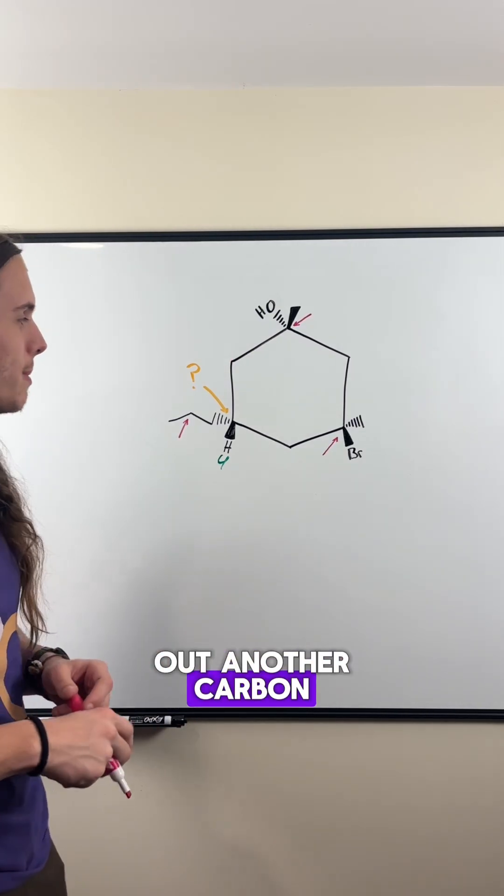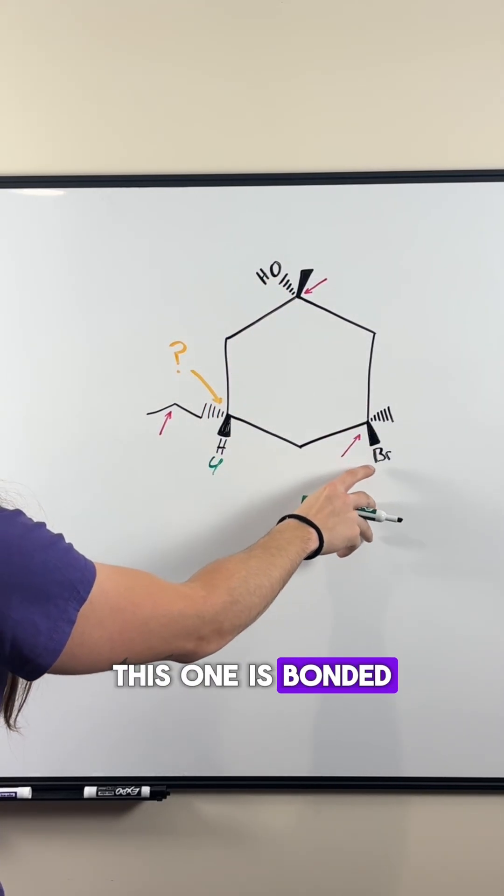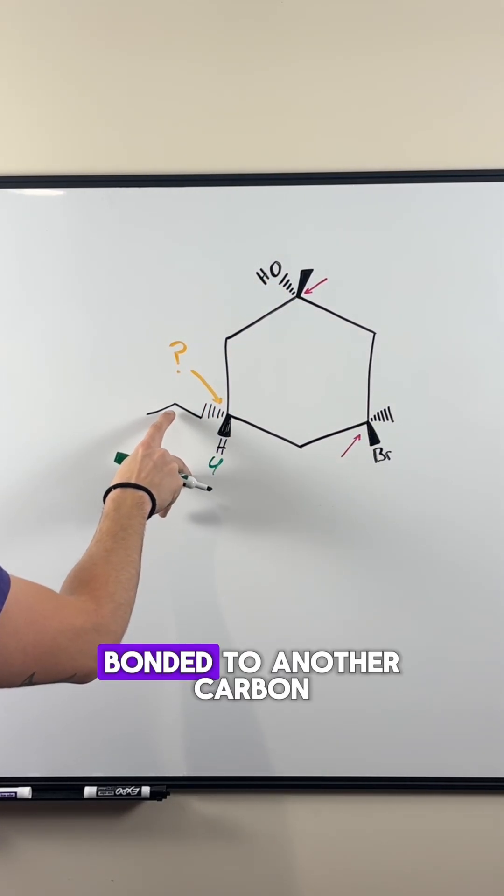we have to branch out another carbon and this is where we'll find our differences. This carbon is bonded to an oxygen, this one is bonded to a bromine, and this one is bonded to another carbon.